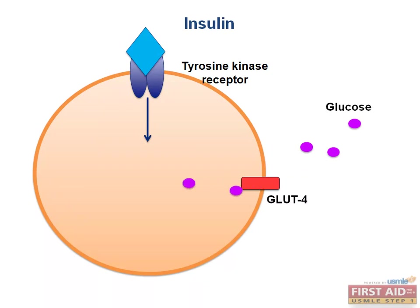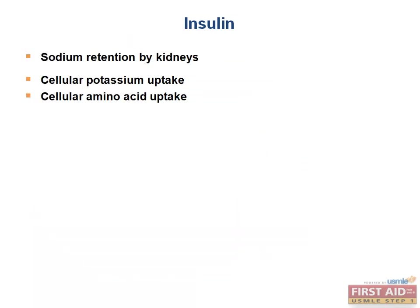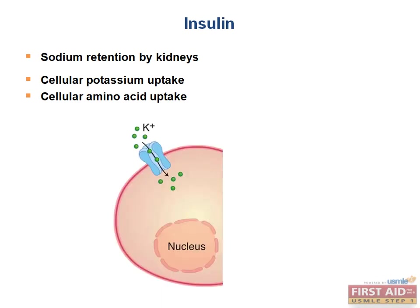Two other things that insulin does include sodium retention by the kidneys and increasing cellular uptake of potassium and amino acids by all cells. It is important to remember that insulin shifts potassium into cells because when we administer insulin therapeutically, it can cause large potassium shifts and consequently hypokalemia. This can result in conduction deficits in the heart and lead to arrhythmias. A key setting where this applies is when a type 1 diabetic presents in diabetic ketoacidosis — we will review this in the endocrine pathology lectures.